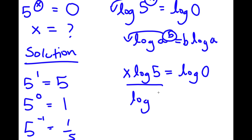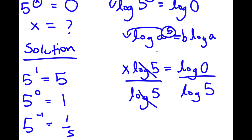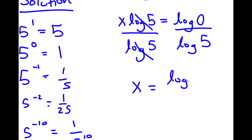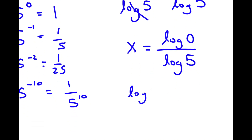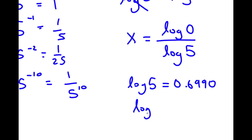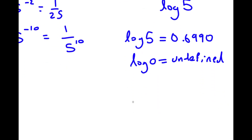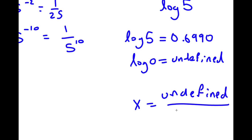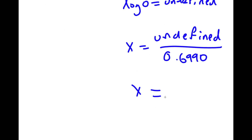Now if I divide both sides by log 5, these two cancel out. And I get x is equal to log 0 over log 5. Now log 5 is equal to 0.6990. And log 0 is actually undefined. Meaning I have x equal to undefined over 0.6990. If something is undefined and you divide it by a number, it's still going to be undefined. So the value of x is undefined.